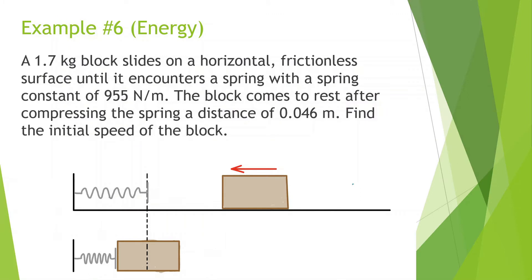A 1.7 kg block slides on a horizontal frictionless surface until it encounters a spring with a spring constant of 955 newtons per meter. The block comes to rest after compressing the spring a distance of 0.046 meters. Find the initial speed of the block. We want to do mechanical energy initial equals mechanical energy final.